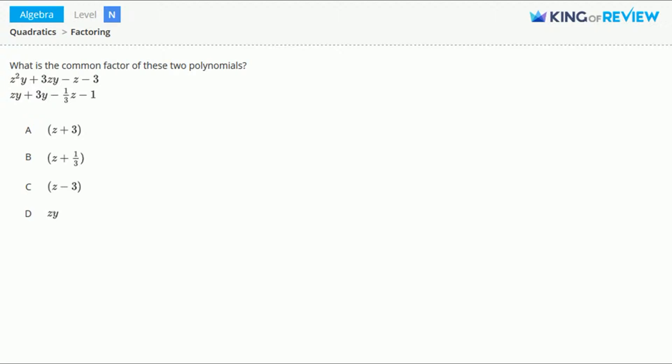Let's first factor each one separately. I'll factor the first polynomial here in red. We'll start by grouping. When we group, we'll do z squared y plus 3zy. This will be our first group. Plus, and then we'll group the last two terms, minus z minus 3.